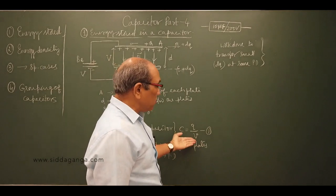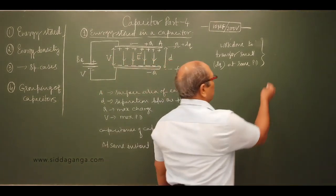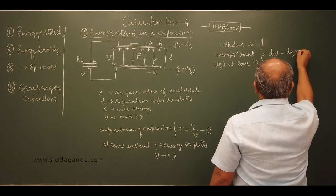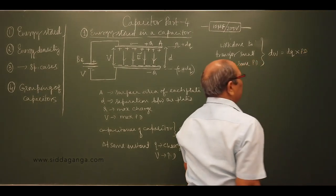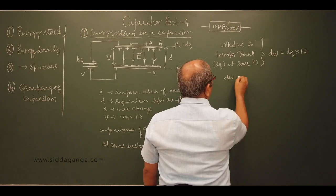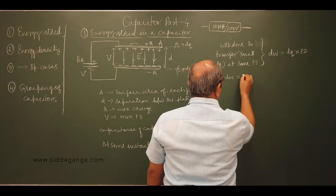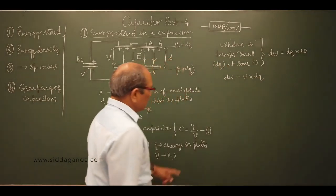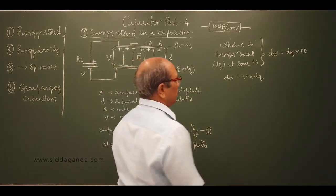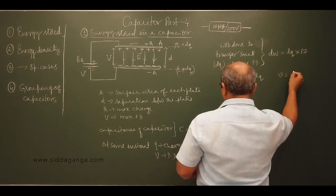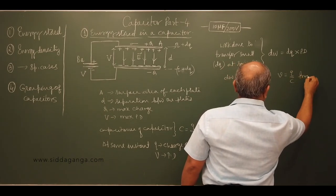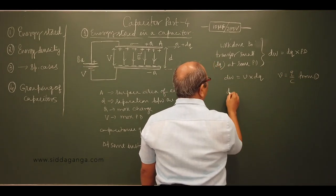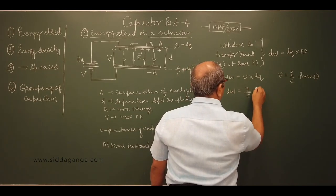Because of that small work done, we can write: work done dW equals charge brought into potential difference V, so dW equals V into dQ. From the capacitance equation, V equals Q by C, so we substitute: dW equals Q by C into dQ.